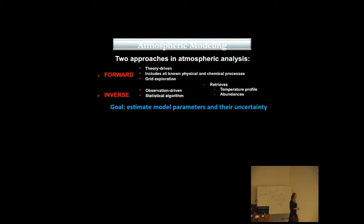Today we have two approaches in atmospheric modeling. One is called forward, or direct modeling technique, which is theory-driven because we use all of our knowledge of physical and chemical processes. We engage them to produce the observable spectra.